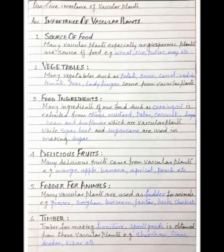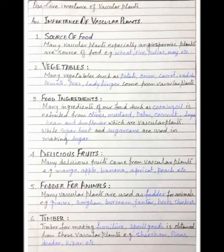Next heading: timber. Timber for making furniture and sports goods is obtained from these vascular plants — for example, shisham, pinus, deodar, kikar, etc.